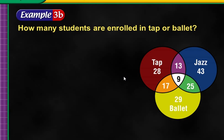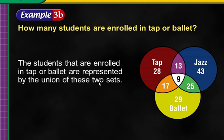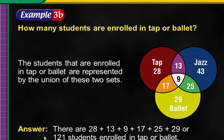Now: how many students are enrolled in tap OR ballet? Notice it's an OR statement. I always come back and ask: are these students in tap? The 28 — yes, count them. I don't care what else they're involved in; they're in tap, so we count them. The 13 — are they in tap? Yes. The 43 — are they in tap? No. Are they in ballet? No — so we don't count the 43. Going through all the numbers, we need the 28, 13, 9, 17, 29, and 25. The only number we don't need is the 43, because they are not in tap and not in ballet. Adding them all together, we get 121 students.